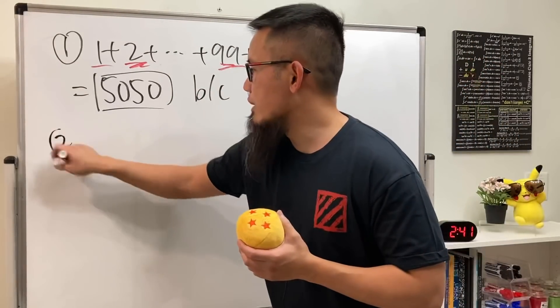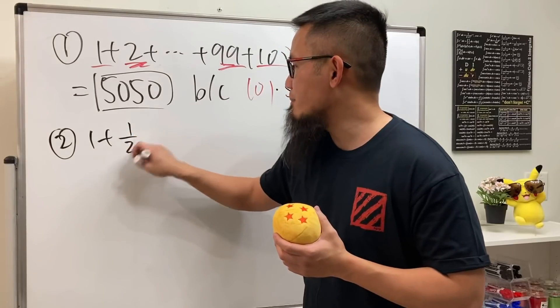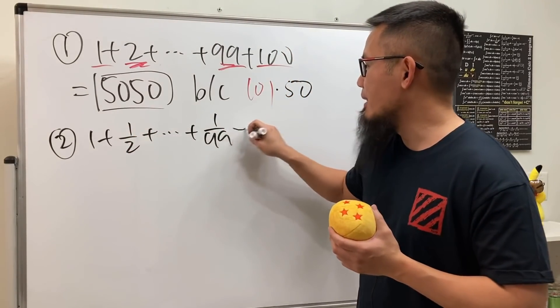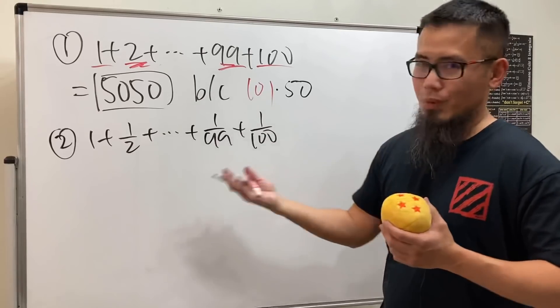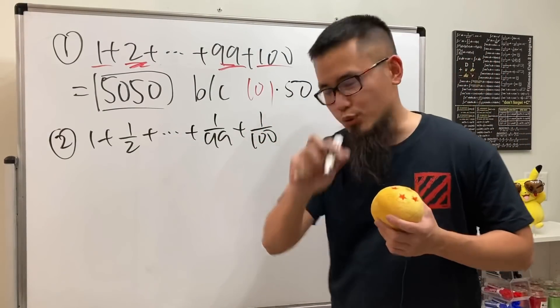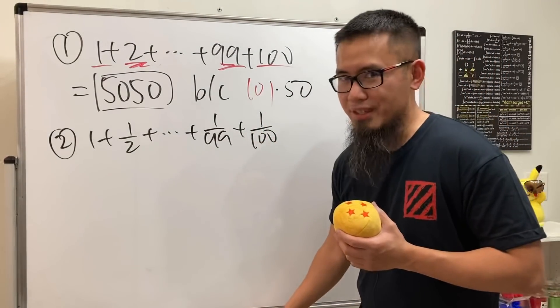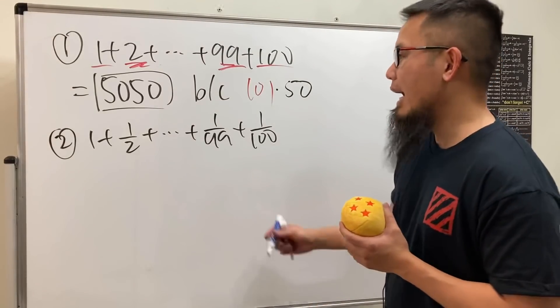All right, now let's look at number 2: 1 plus 1/2 plus... plus 1 over 99 plus 1 over 100. Well, what's the answer for this? Okay guys, 5 seconds: 5, 4, 3, 2, 1. Hopefully you didn't spend the time to get a common denominator because otherwise that would take you like an hour or so.